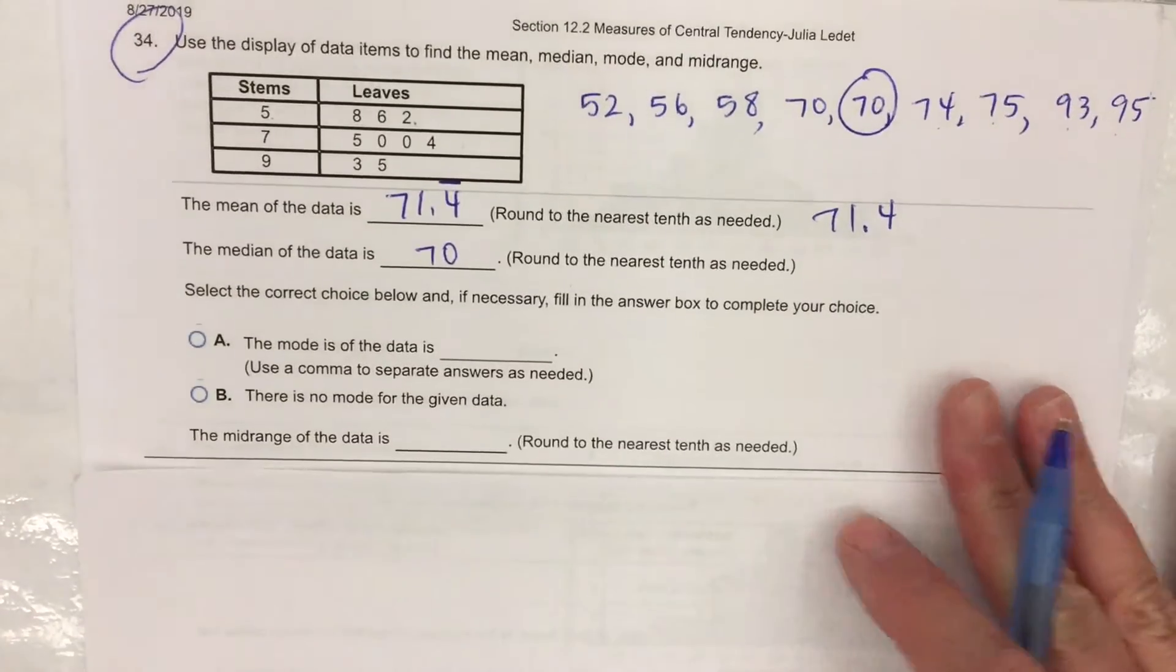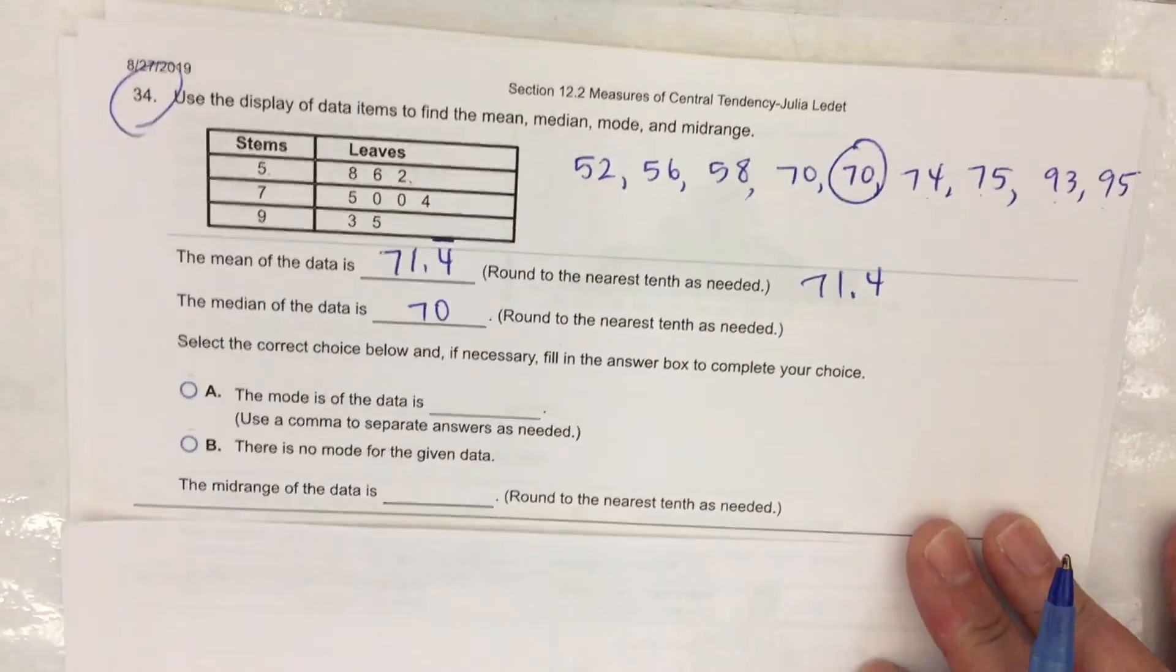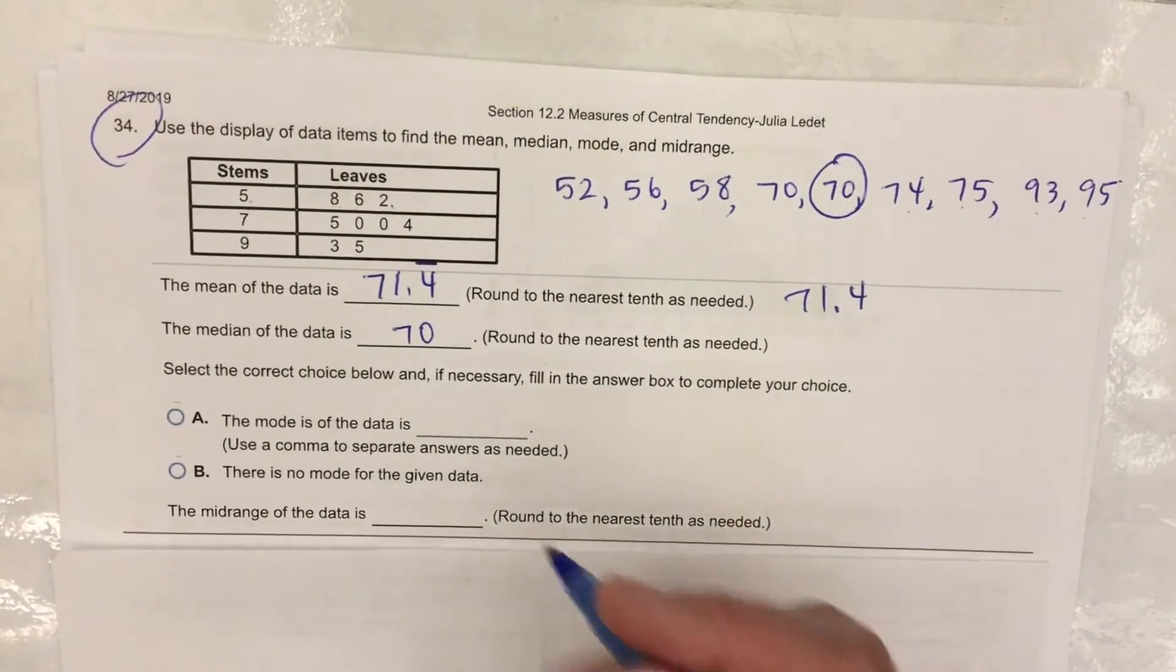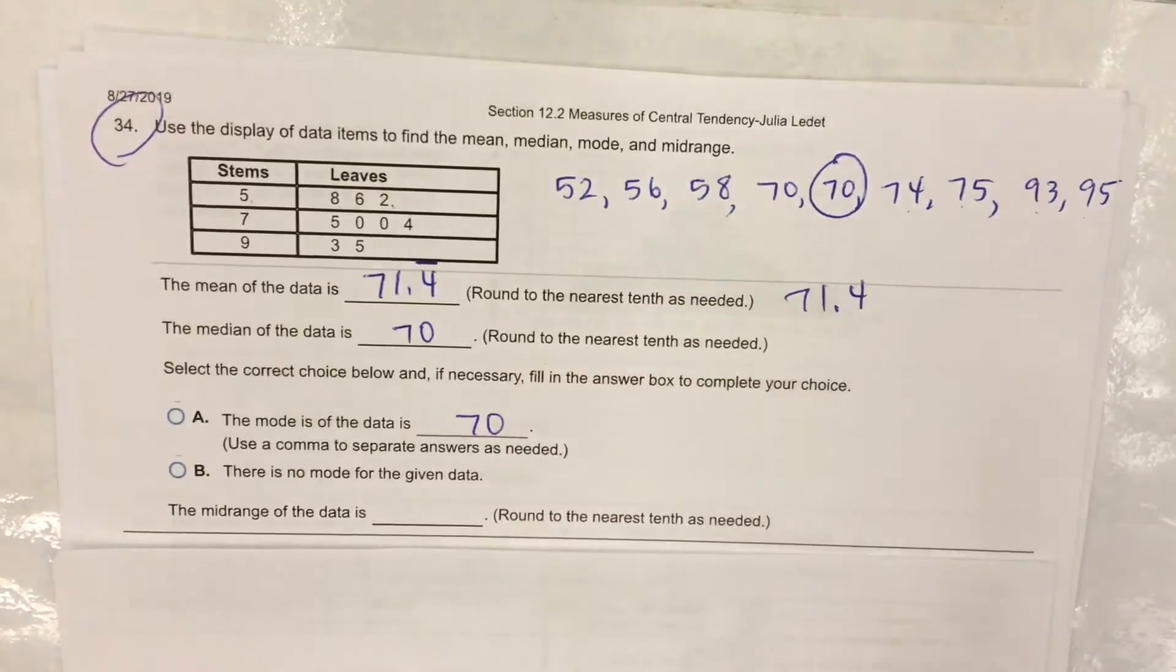For the third one, find the mode. The mode is the one that occurs the most. That is seventy. It occurs twice.